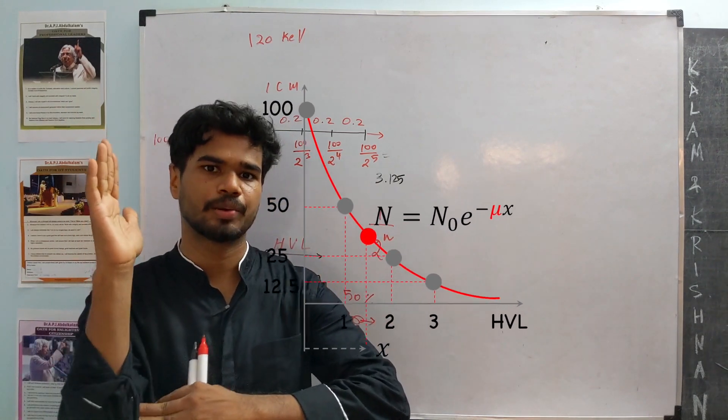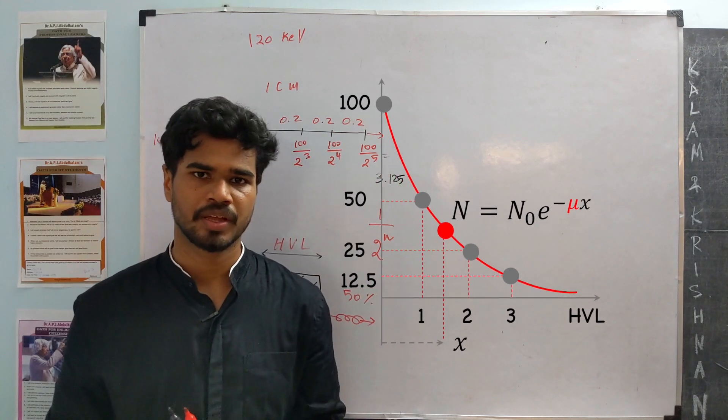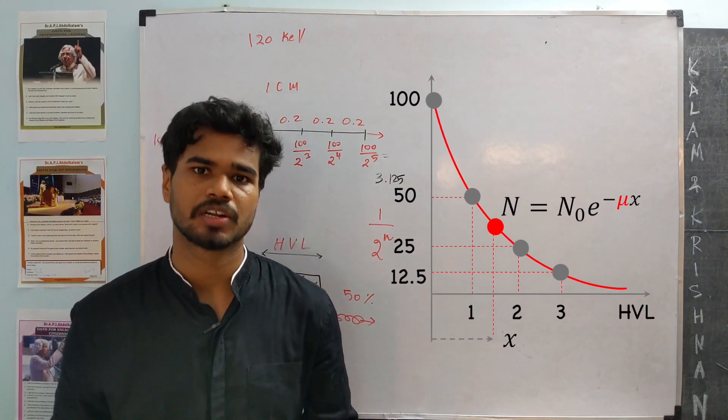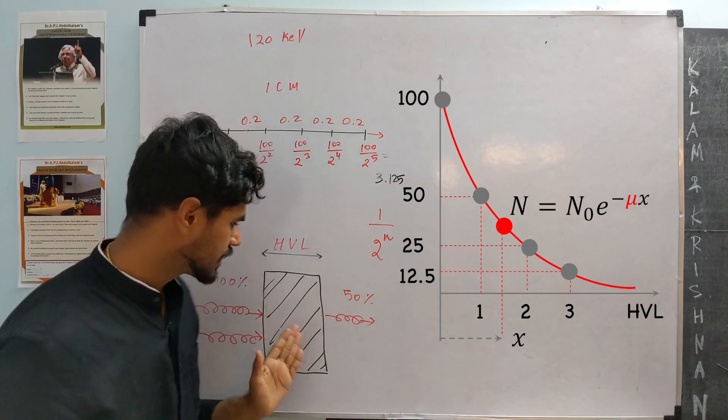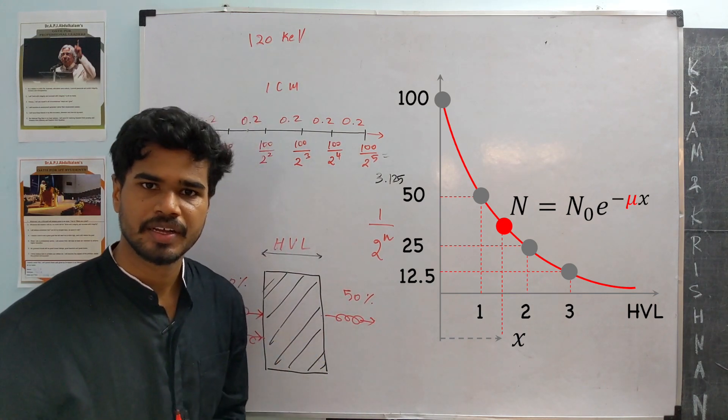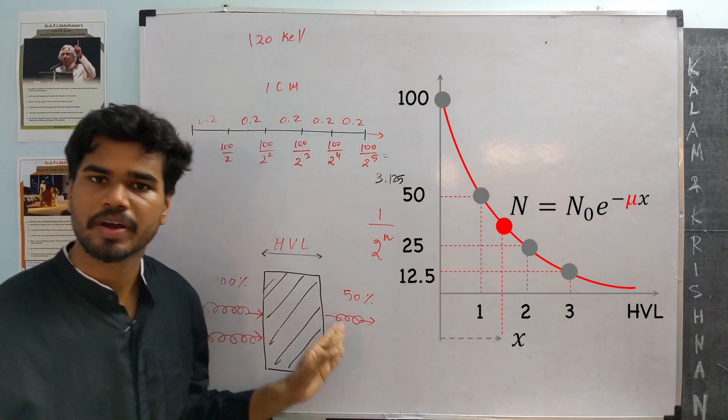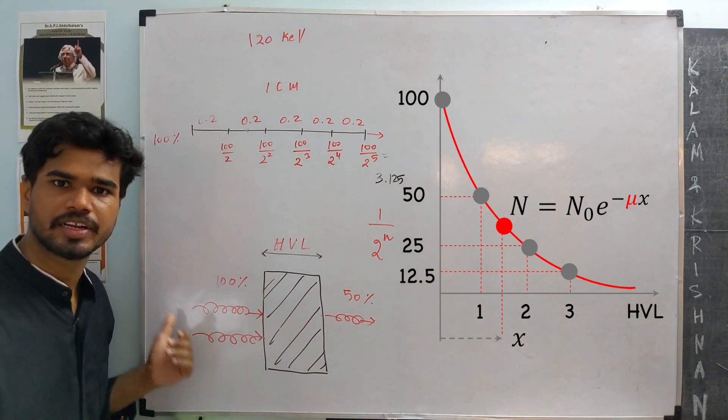All these half-value drops, if we connect them, it forms an exponential curve, where the total number of photons exiting through the material on this side is n, given by the photons that enter the material on this side.